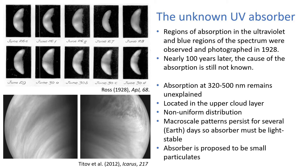However, despite having known about it for nearly 100 years, the cause of the absorption at 320 to 500 nanometers is still not known. We do know a bit about it: it's in the upper cloud layer, which consists of two modes of particles — mode two, which are the cloud droplets themselves, and mode one, which are small particulates, and it's proposed that this is the absorber.